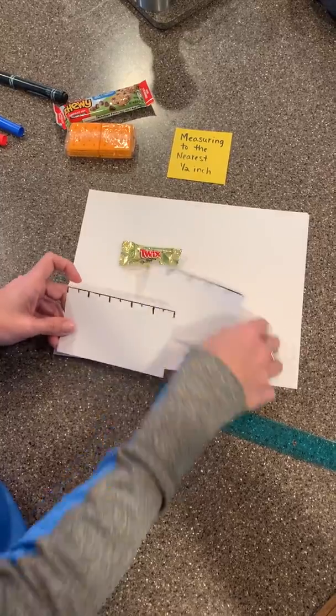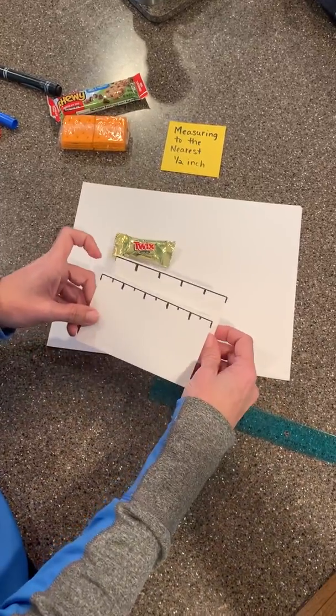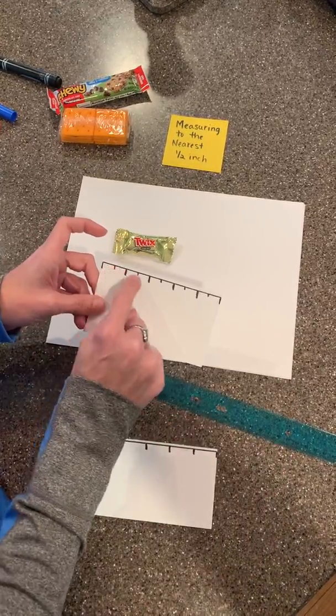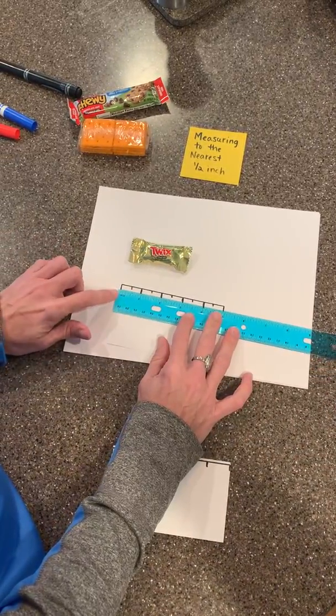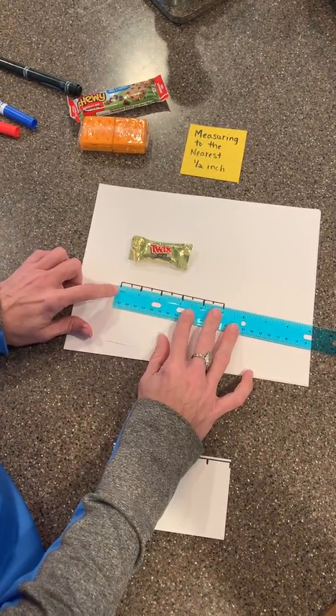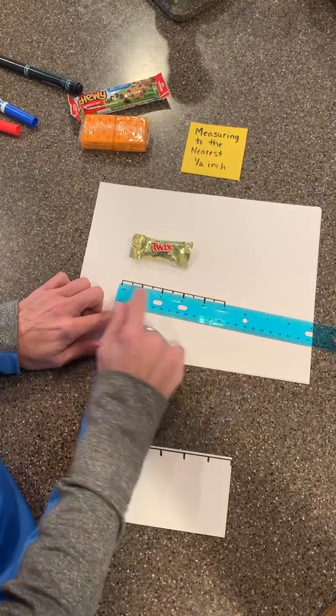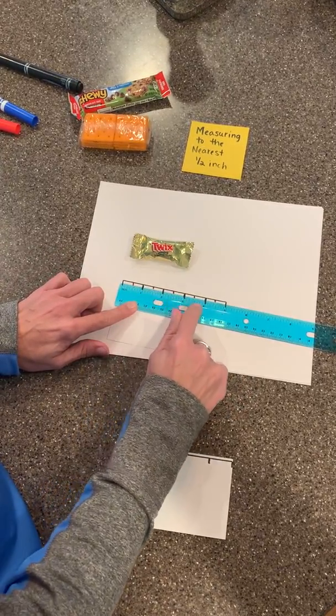What I did next is I took that index card, and I really put the halfway marks. So I took my ruler, once again, I started here on the end there, let that space.